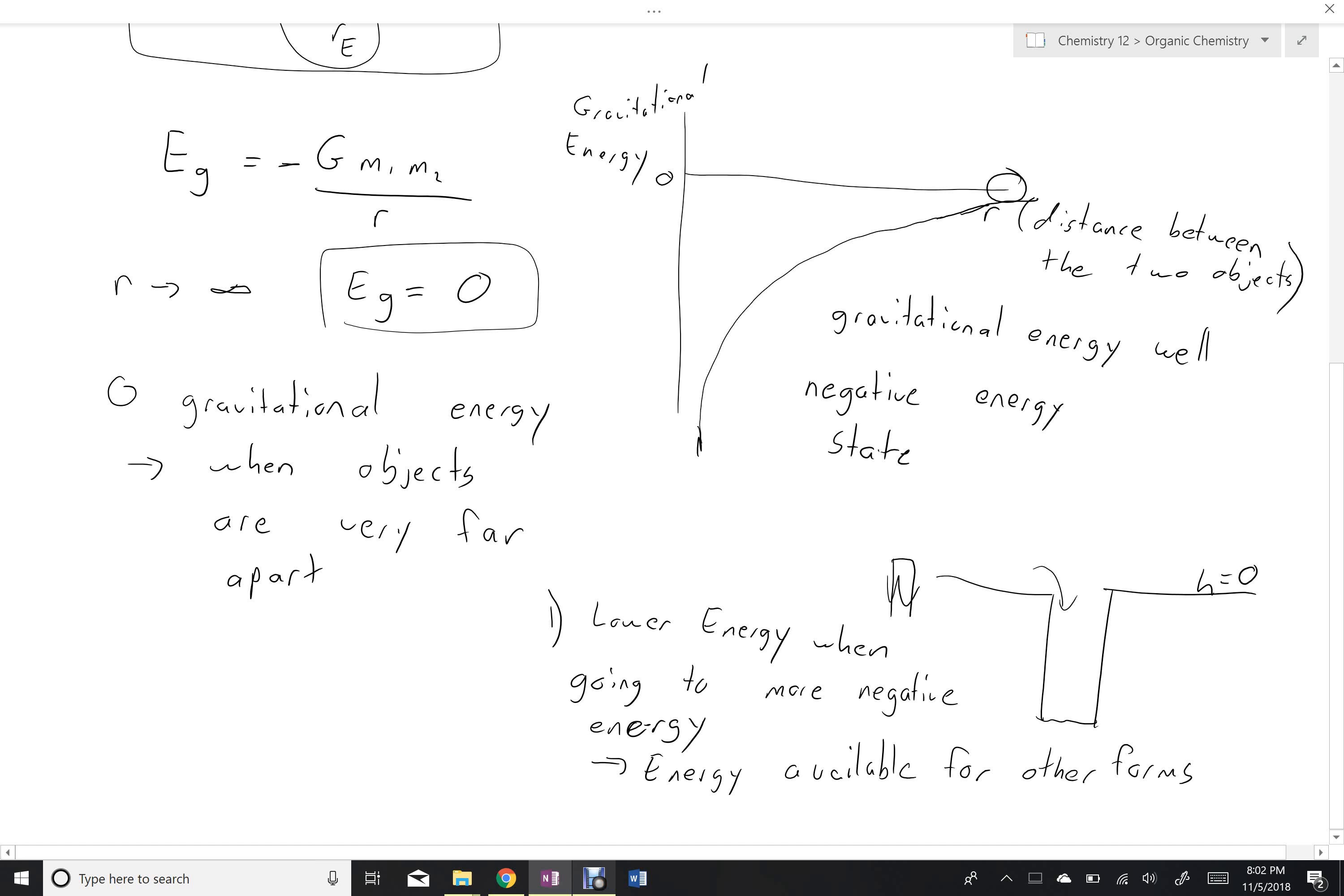If we imagine the rock falling into the well, for example. So here's a rock that we're going to drop into this well. Then, as it falls, it's going to pick up speed. Which means gravitational energy will be going down and it will be being transferred into kinetic energy. So that's one way to look at it.